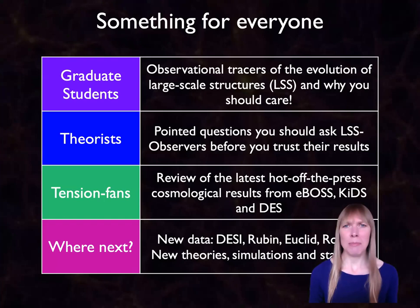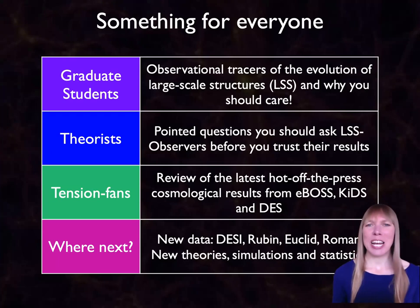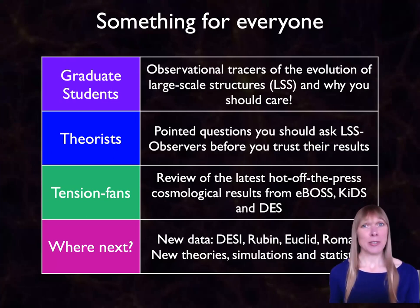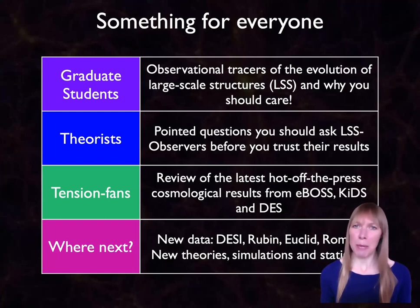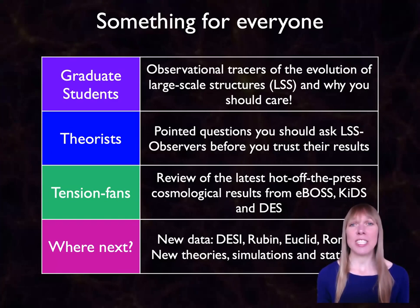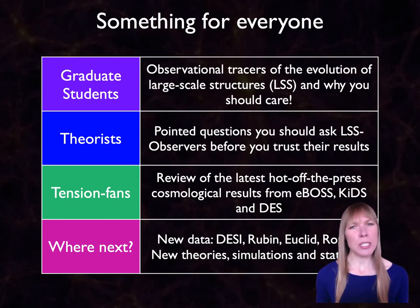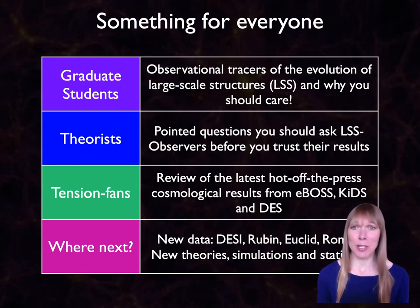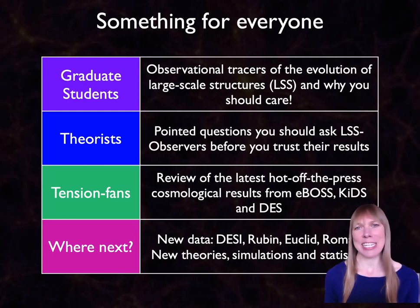I hope I've got something for everyone in this talk. The beauty of these virtual seminars is that you can skip ahead to the part of the talk that you are most interested in. I have a colour bar at the top of my slides to help you find the part of the video you want to watch. I'm going to start with a section for graduate students, then a section for theorists — the pointed questions you should be asking large-scale structure observers before you trust their results. Attention fans, there's a section reviewing the latest hot-off-the-press results from eBOSS, KiDS and DES, and I'll wrap up with an overview of exciting new tech coming online soon: DESI, Rubin, Euclid, and Roman.